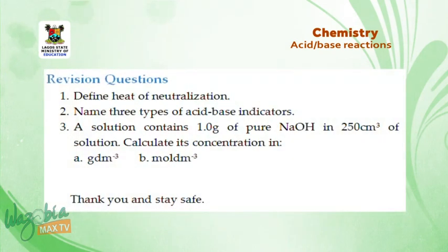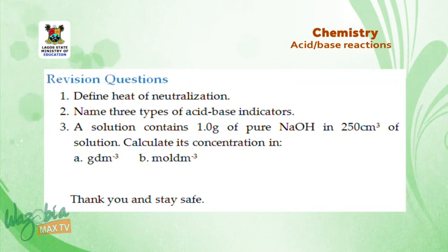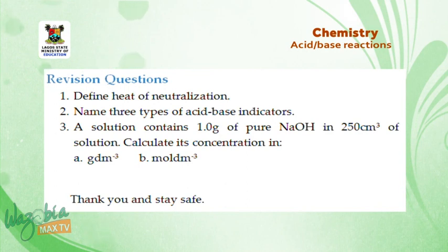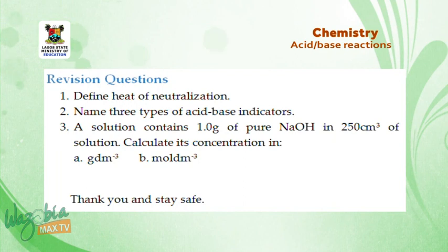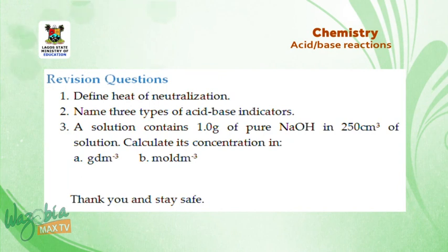Revision questions. 1. Define heat of neutralization. 2. Name three types of acid-base indicator. 3. A solution contains 1 gram of pure NaOH in 250 cm³ of solution — calculate its concentration in: A. grams per dm³; B. moles per dm³. Thank you and stay safe.